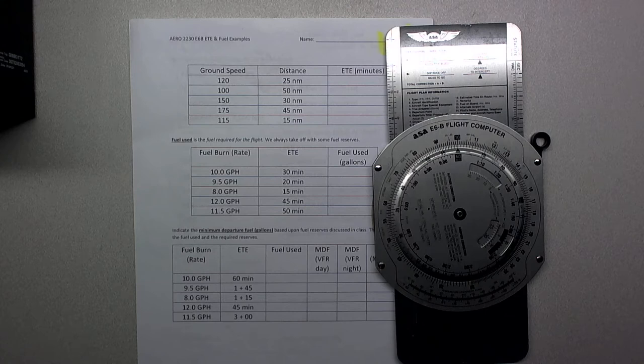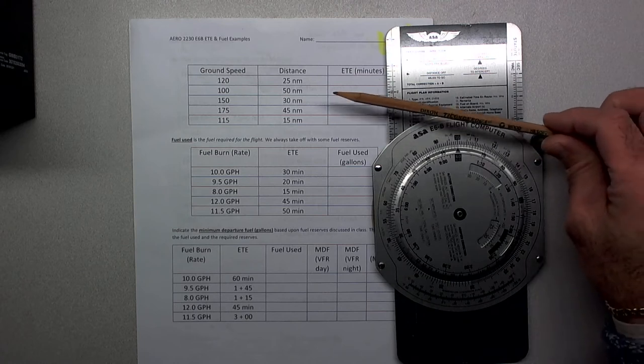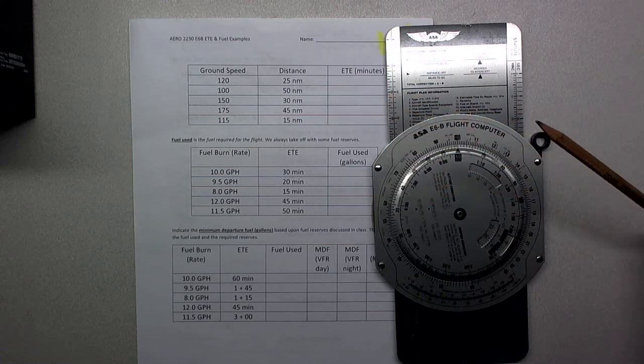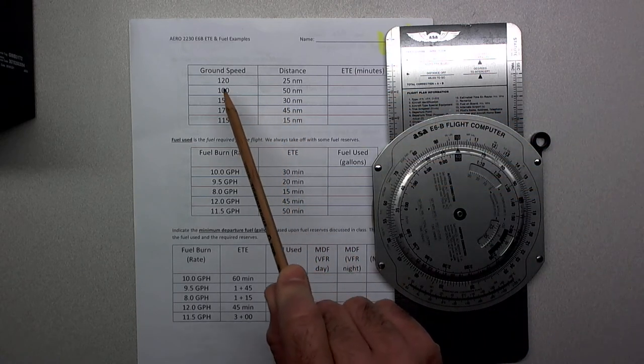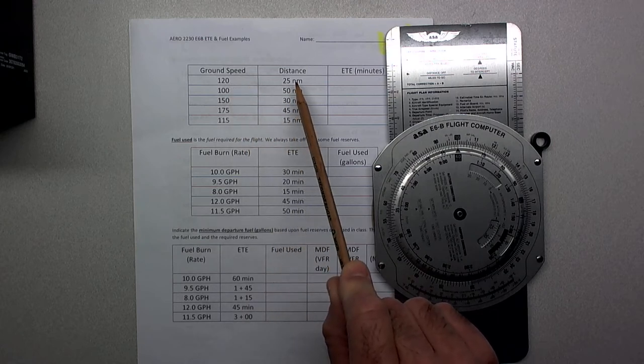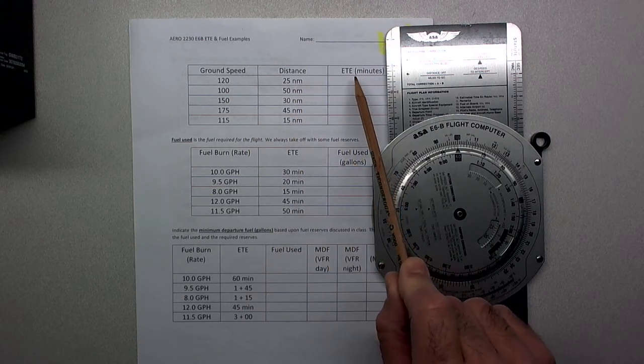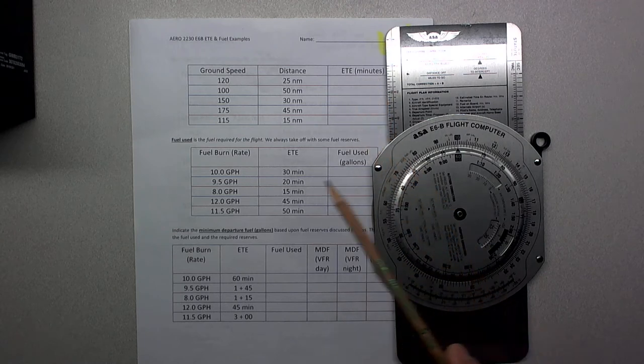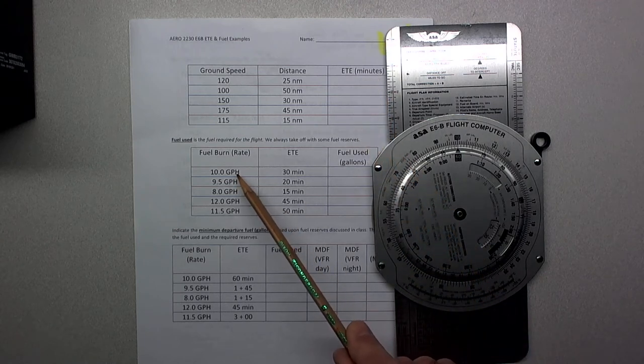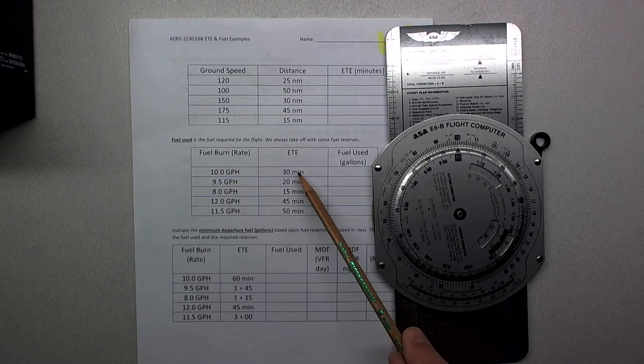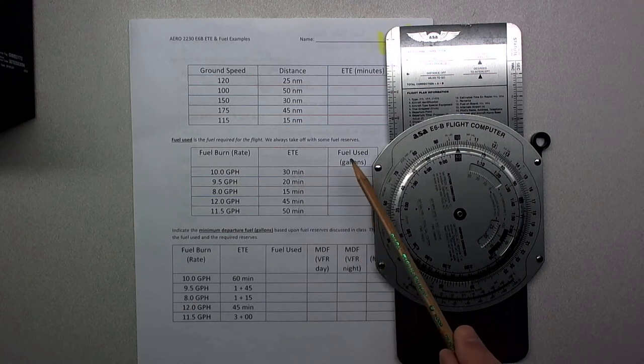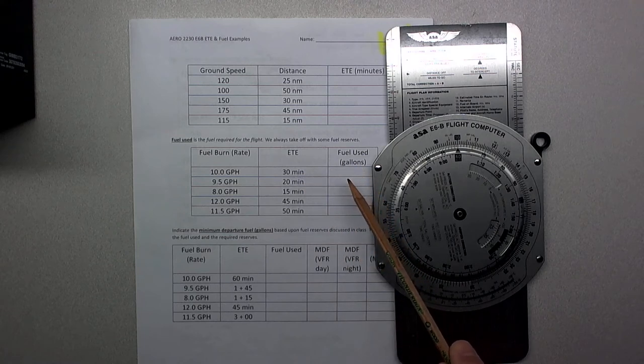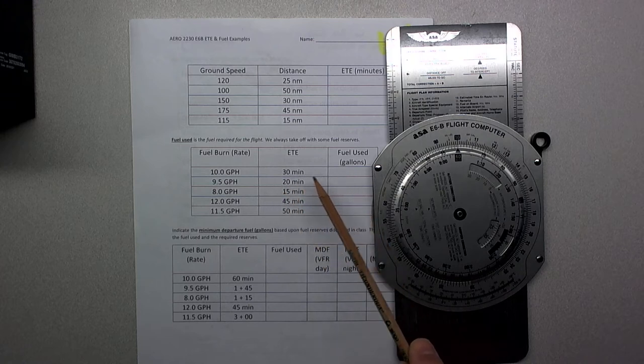As you can see, this is the exercise I gave out in class. The first problem gives us ground speed and distance and asks us to figure out our estimated time en route. The second one gives us fuel burn per hour and estimated time en route, and asks us to figure out how much fuel we will use in that time.